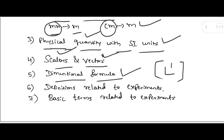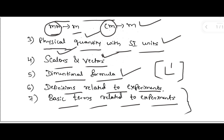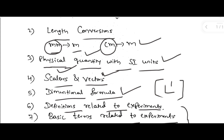Next step is definitions related to the experiment. If there are any definitions related to the experiment, you have to know the answers. You may also get questions on basic terms and concepts related to the experiment. If you prepare in this manner, you can easily get four marks in your examination from VAWA questions.